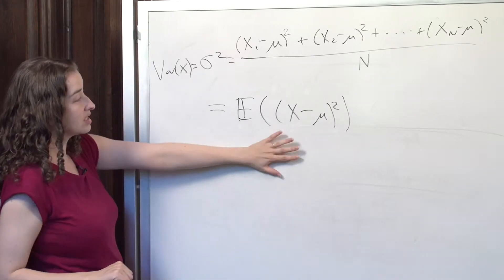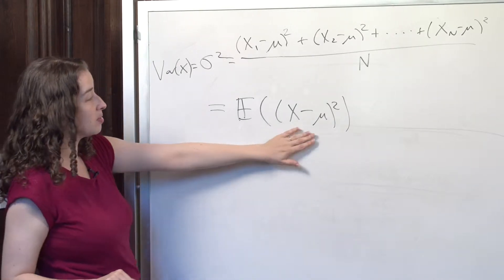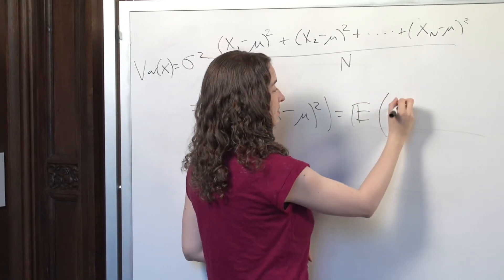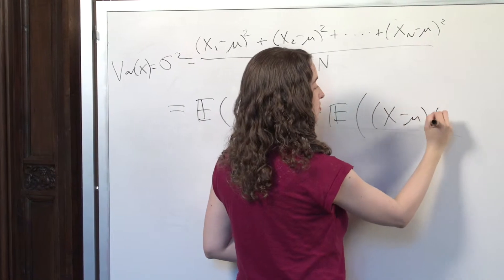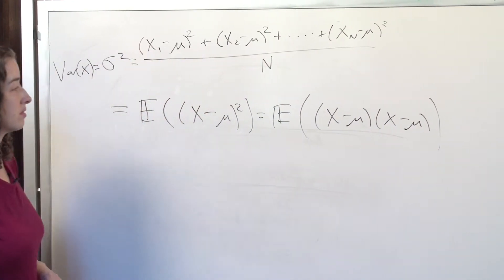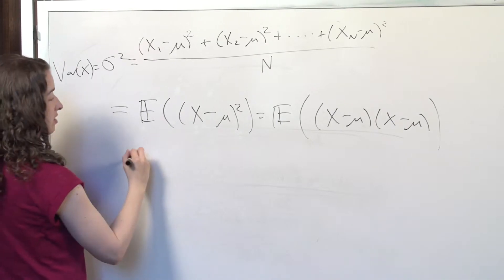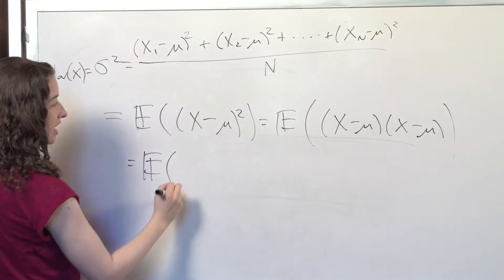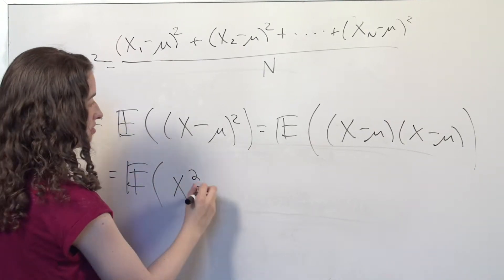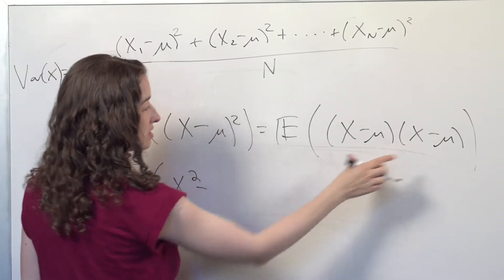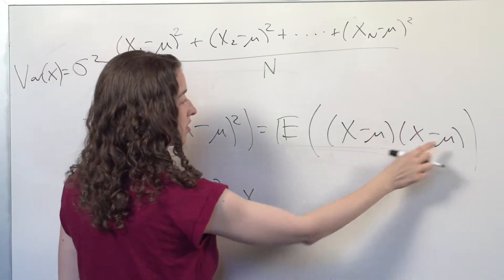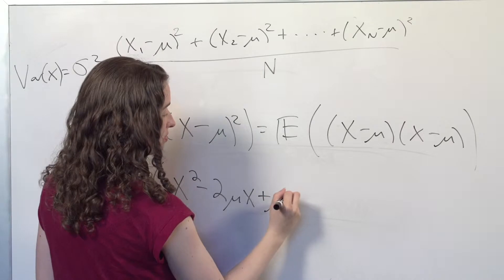What does that help us see? Let's think about this quantity for a moment. Let me multiply out this middle part. This is equal to the expected value of x minus mu times x minus mu. Let me continue to multiply this out: I have the expected value of x squared minus mu x minus mu x, so minus 2 mu x plus mu squared.